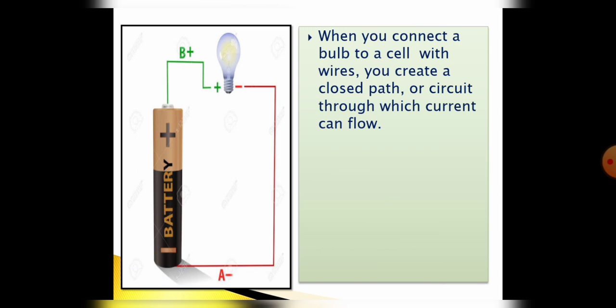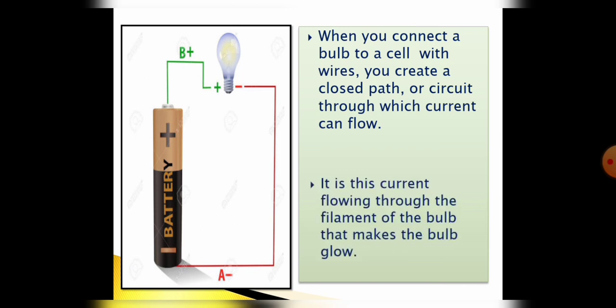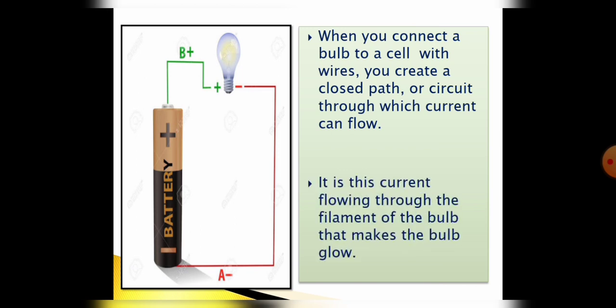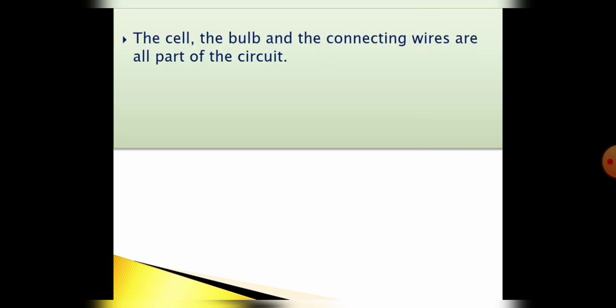That means current can only flow in a closed path, and this current also flows through the filament of the bulb which makes the bulb to glow. Next, the cell, the bulb, and the connecting wire are all part of the circuit.